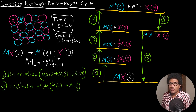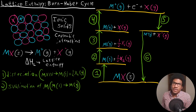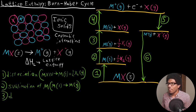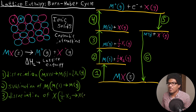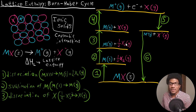Step three: the metal is still the same gaseous species, so nothing changes with it. However, in this third step, we end up with just one atom of the halogen rather than two. So in step three, we're looking at purely the dissociation of the halogen — going from one-half X2 to just X gas. All species are gases at this point. The dissociation of the halogen is the only thing that changes during step three.